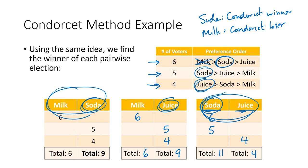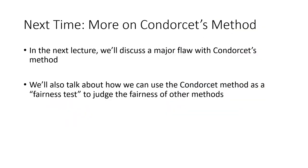And juice is neither — juice was neither the Condorcet winner nor the Condorcet loser because juice won one of its matchups but lost the other one. We're going to talk more about Condorcet's method in the next lecture, and we're also going to talk about how we can use the Condorcet method as a fairness test to judge the fairness of other methods. I'll see you next time.